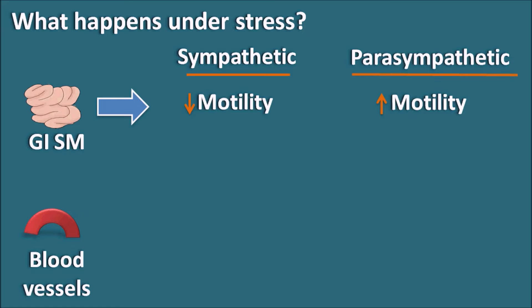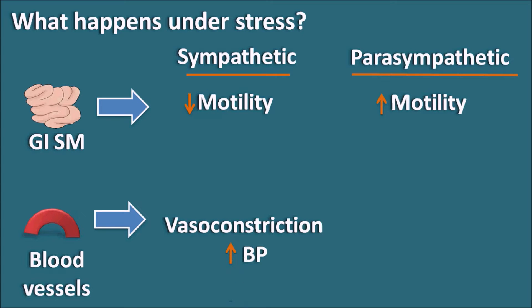Regarding blood vessels: under stressful conditions, for example when running, we require higher blood pressure. The sympathetic system produces vasoconstriction, which increases blood pressure. On the other hand, the parasympathetic system produces vasodilation, resulting in a decrease in blood pressure. In this way we can remember the actions of the sympathetic division at different organs, with the parasympathetic system producing quite opposite actions.